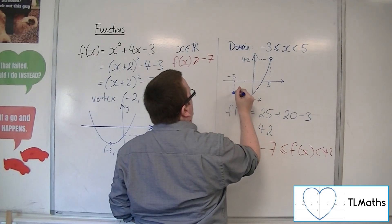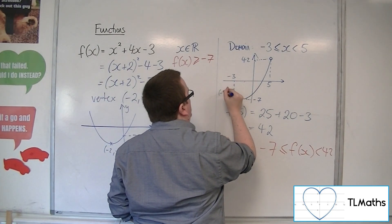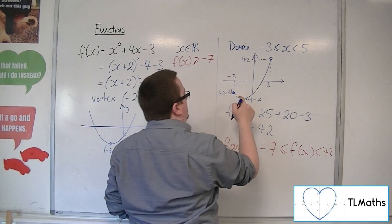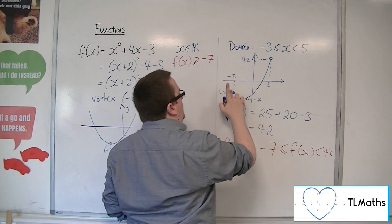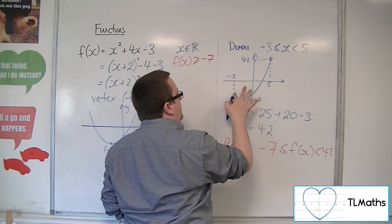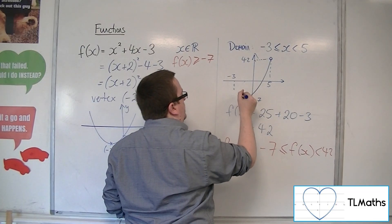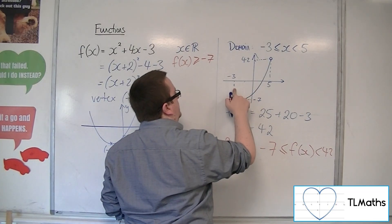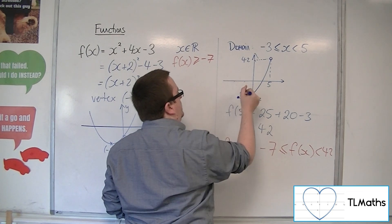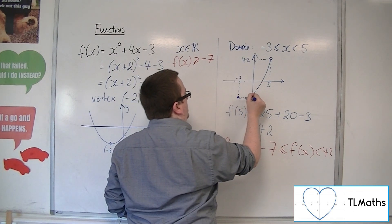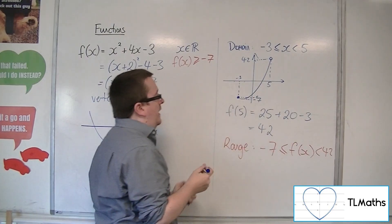So this point would be -6. It'd be a bit further along, wouldn't it? Yeah, it's not very accurate, this graph. Let's bring it down slightly. So that'd be -6.